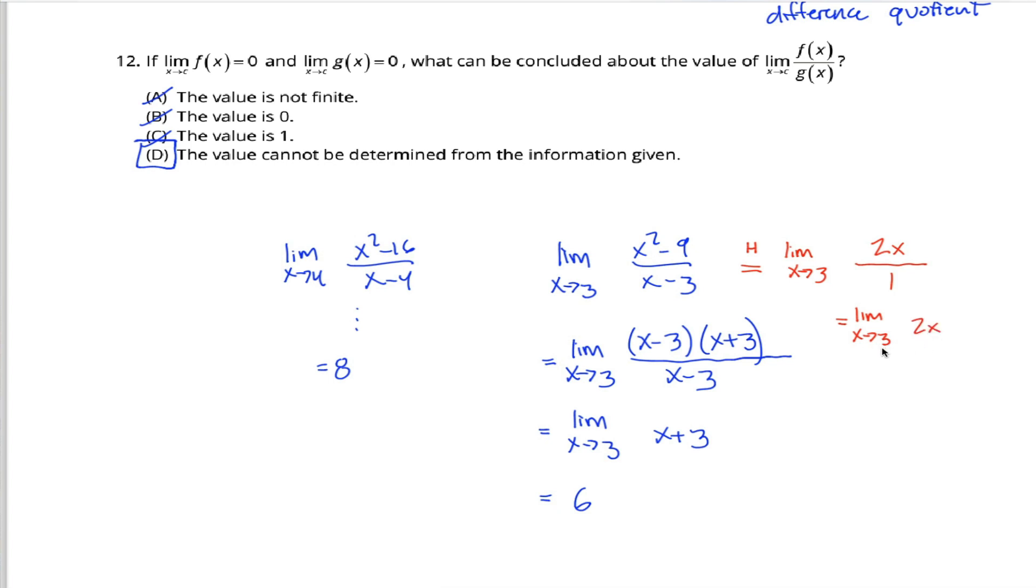because the limit in red is just asking me what's the limit as x approaches 3 of 2x. Well, if x gets really, really close to 3, 2 times something really close to 3 gets really close to 6. Same answer we got down here,